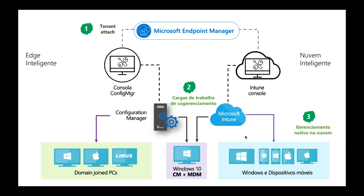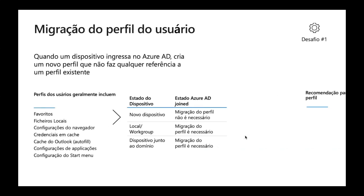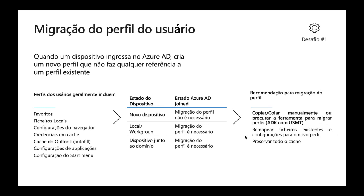Quando falamos de Azure AD, há quatro cenários que devem ter em conta antes de tomar alguma decisão. O primeiro cenário tem a ver com a migração do perfil do utilizador. Quando um dispositivo ingressa no Azure AD, está a criar um novo perfil que não faz qualquer mapeamento ou referência a um perfil existente. Se tiverem um dispositivo novo, recém saído da loja, quando ingressam no Azure AD, não há muito trabalho a fazer. Contudo, se tiverem um dispositivo já ingressado no Active Directory local, terão que fazer uma migração do perfil, que tipicamente contém informação sobre favoritos, ficheiros locais, configurações do navegador, configurações de aplicações, start menu, etc.